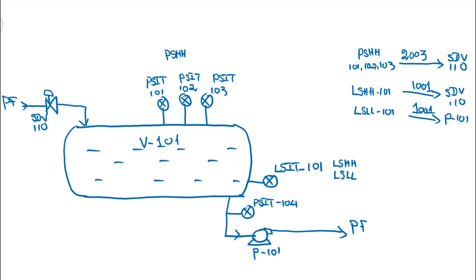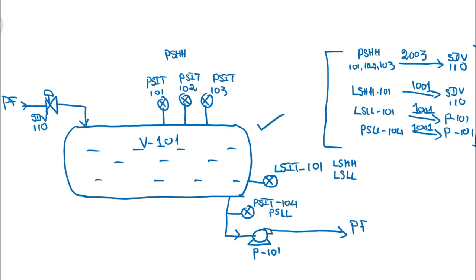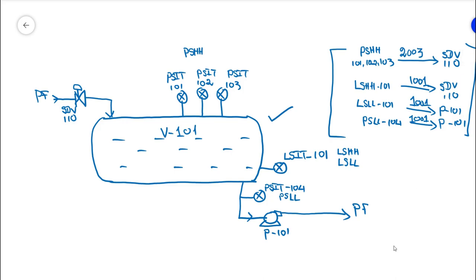PSIT-104 on the suction line has a pressure low-low trip. On a one-out-of-one logic, it trips pump P-101 to protect it from damage. These are the trip initiators for protecting the vessel. Now let's capture this control philosophy in the cause and effect sheet.